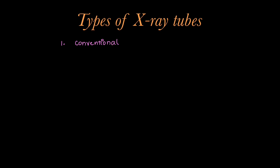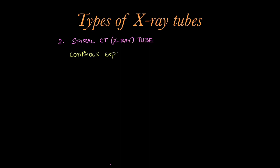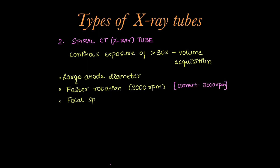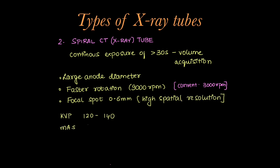Coming to the most important part: types of x-ray tube. We already learnt how the conventional x-ray tube works. Now we will learn about the spiral CT x-ray tube, used in CT for continuous exposure for more than 30 seconds for volume acquisitions. Hence, a large anode diameter is used. There is faster rotation speed of 9000 rpm, compared to 3000 rpm in normal tubes. The focal spot is smaller at 0.6 mm for higher spatial resolution. KVP 120 to 140 is used, with MAS up to 400.